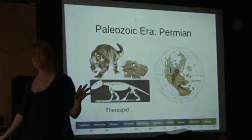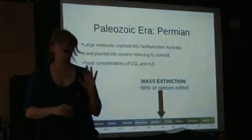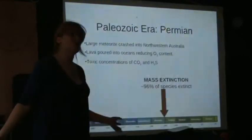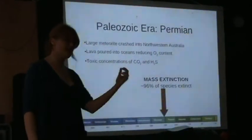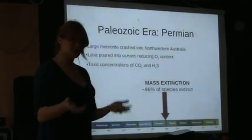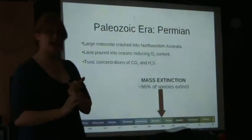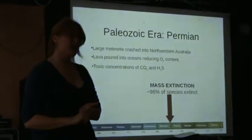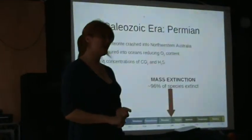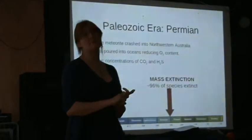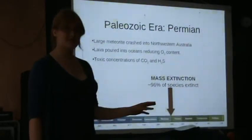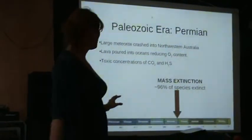At the end of this period, there was another massive extinction event. A large meteoroid crashed into northwestern Australia. Lava poured into the oceans and we saw a massive reduction of the oxygen content. The oxygen-depleted water started rising to the surface, giving off carbon dioxide and hydrogen sulfide. Basically, any animals present on the planet who weren't killed by the initial impact were mostly poisoned. This extinction event is the biggest our planet has ever seen, with 96% of life being absolutely wiped out.